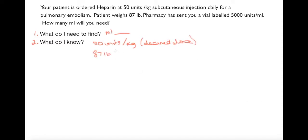What I need to do is convert that into kilograms. So if I complete the math right here I can see that 87 pounds is equal to 39.54 kilograms.